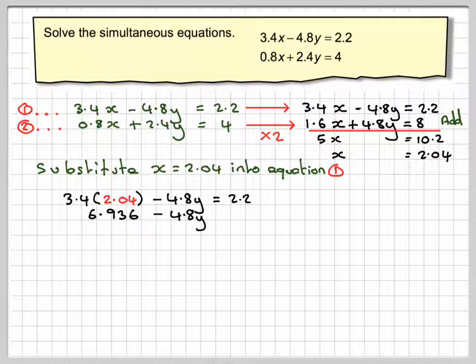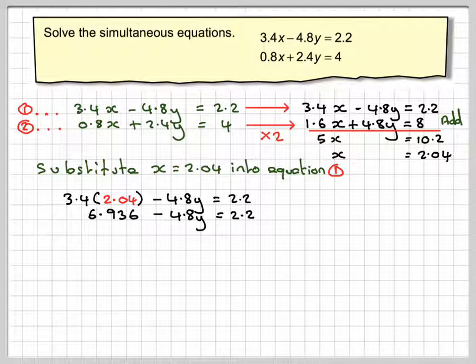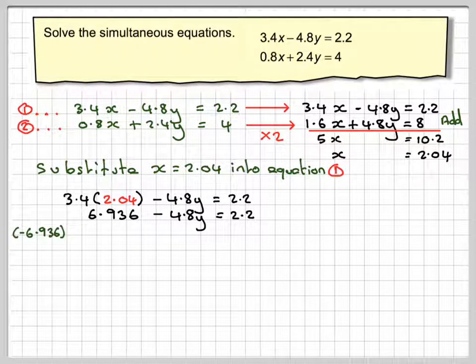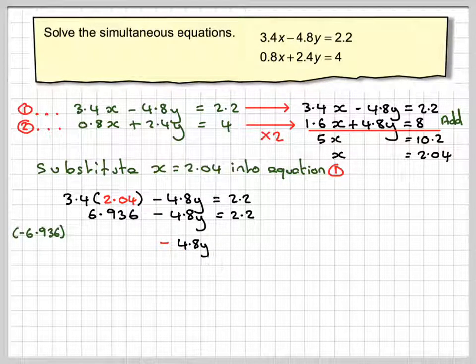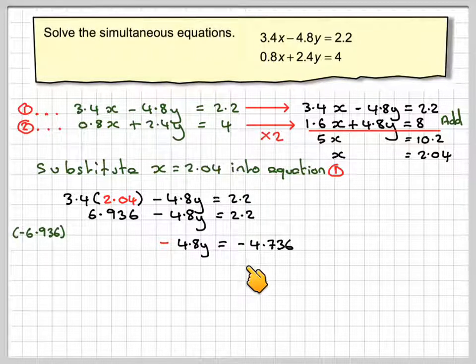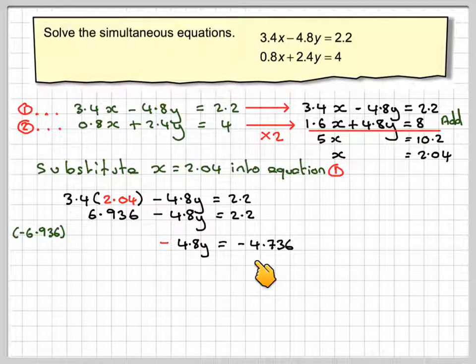minus 4.8y equals 2.2. Now let's subtract 6.936 from both sides. So we're still going to have the minus, don't forget the minus sign here, minus 4.8y equals 2.2 minus 6.936, which is minus 4.736.